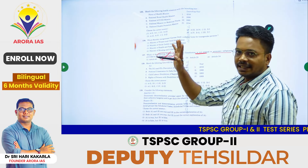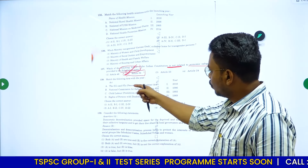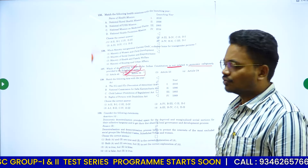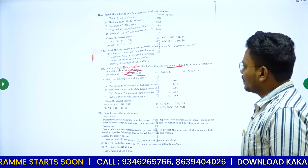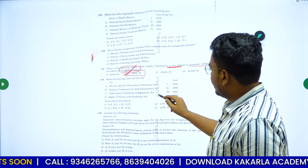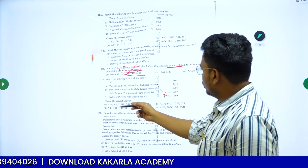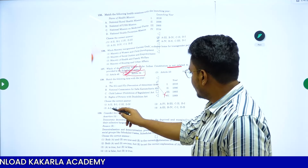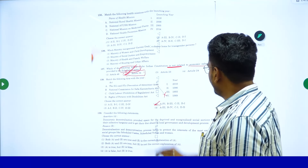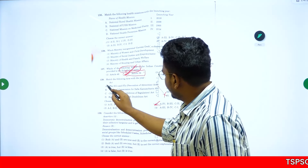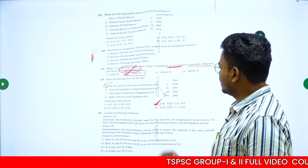Question 138 is about matching acts and years. The SCs and STs Prevention of Atrocities Act — the year is 1989. You need to match the fourth pair correctly for this question.